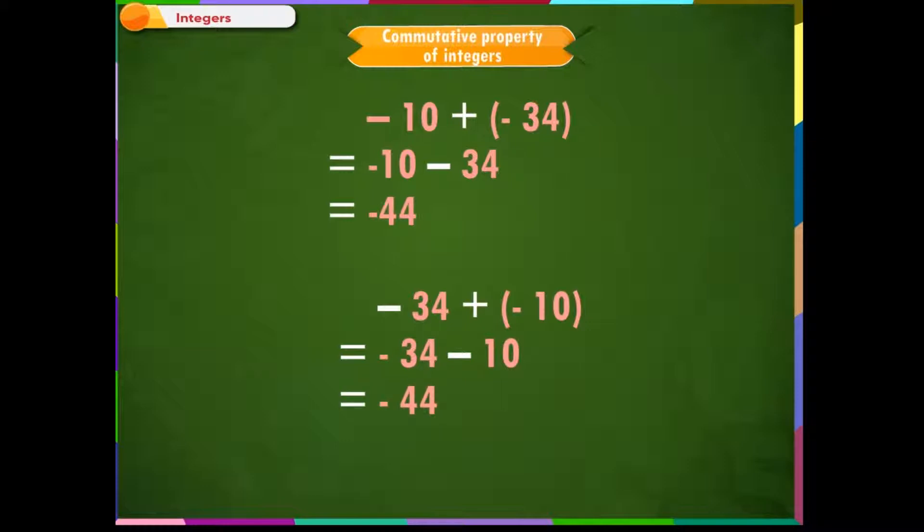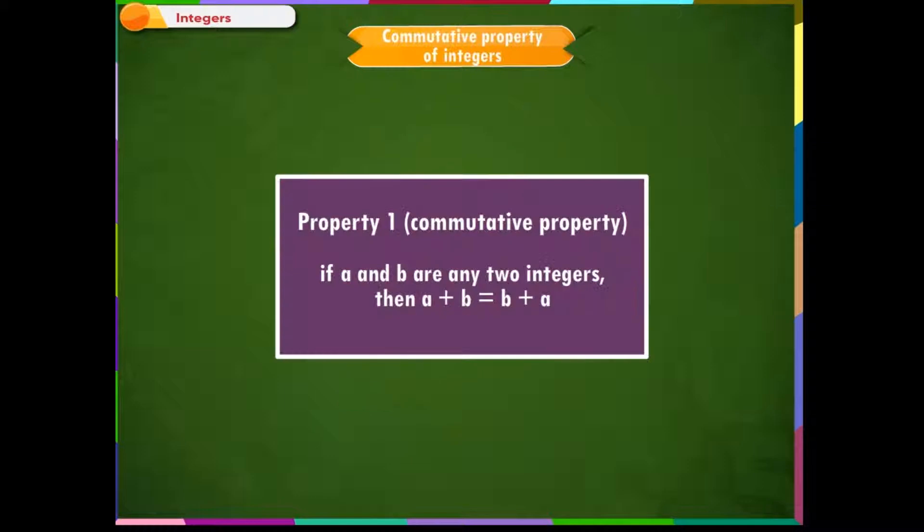Thus, we see that for every pair of integers, the sum does not change if they are added in different orders. If we generalize this, we get property 1, which says if A and B are any two integers, then A plus B is equal to B plus A. We can also say Commutative Property holds true for integers under addition.